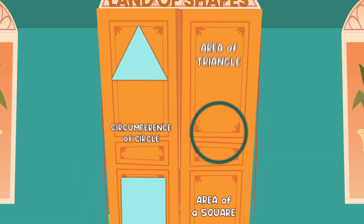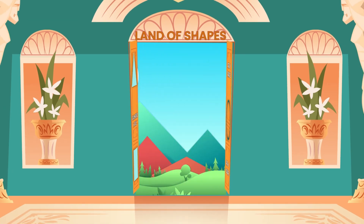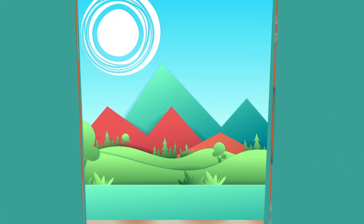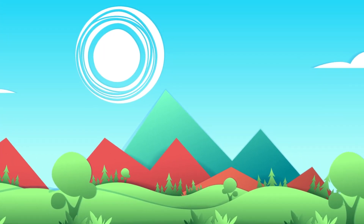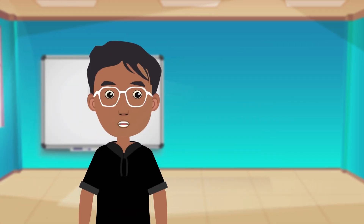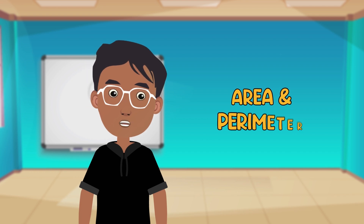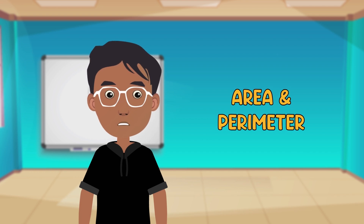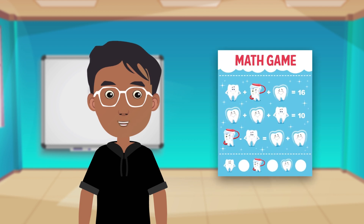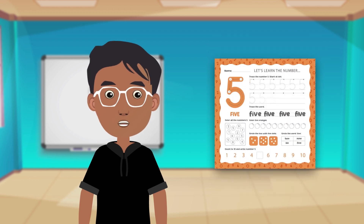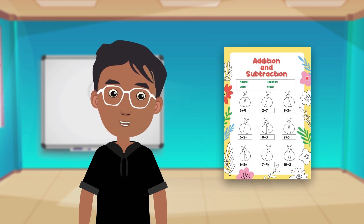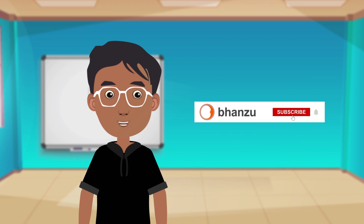As soon as the third puzzle is solved, the door opens and they enter the land of shapes. You saw how we opened a door to the land of shapes using the concept of area and perimeter. Try it yourself by downloading the worksheet from the description below, and subscribe to our channel for more such adventures.